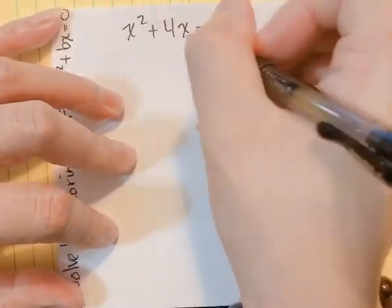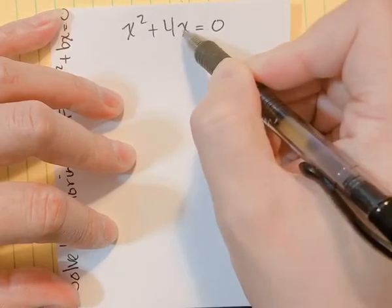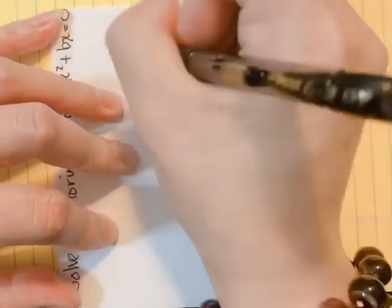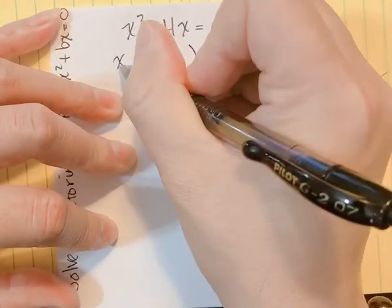So how do I do this? I look at both terms and say they do have something in common. They have at least one X in both of them, so I factor that X out. If I factor X out...